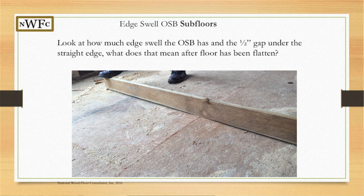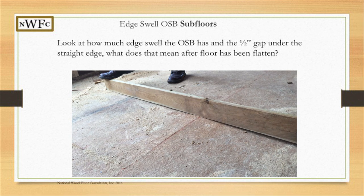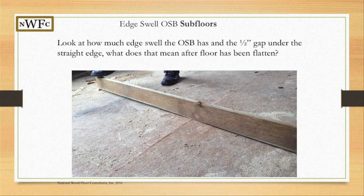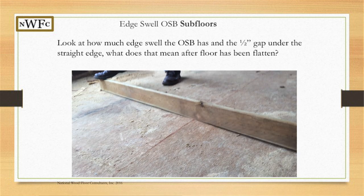Here you can see edge swell on a panel — I'm guessing it's about a half inch off the floor. What's the fix? When you grind this down, how much subfloor do you have left once you actually get it flat? About three-eighths of an inch — that's how much material you have to remove to get it down, not just round off the edge.